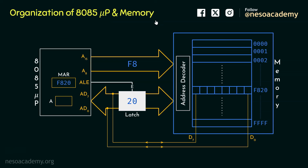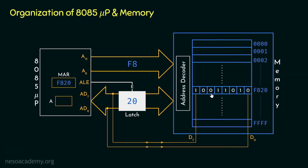Now let's say within memory location F820 we have got the data 1001 1010. How we are going to bring that data into the accumulator register is what we will learn in the next session.